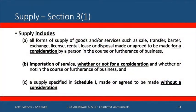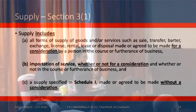Section 3.1: Supply includes all forms of supply of goods and/or services such as sale, transfer, barter, exchange, license, rental, lease or disposal made or agreed to be made for a consideration by a person in the course of furtherance of business. Importation of service, whether or not for a consideration and whether or not in the course of furtherance of business. And a supply specified in Schedule 1, made or agreed to be made without a consideration. So this is the definition of supply.